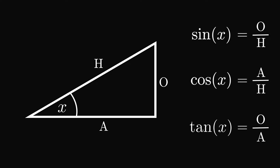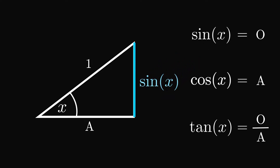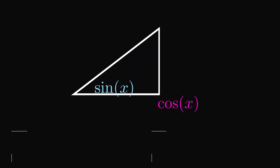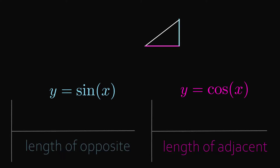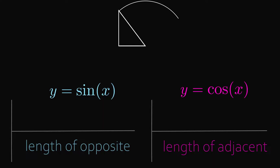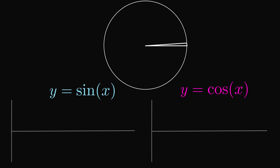Another way to think about them is to let the hypotenuse be equal to one. Then sine x becomes the length of the opposite side and cosine x becomes the length of the adjacent side. If we plot the values of these lengths as the angle x changes, and since the hypotenuse equals one, we will sketch out a unit circle.